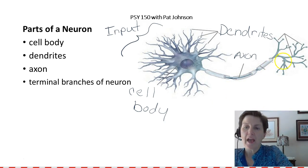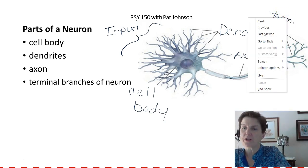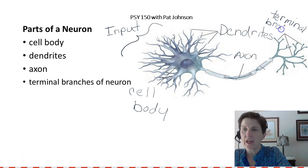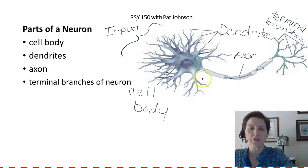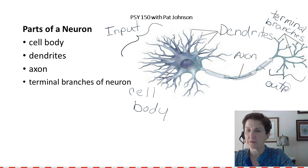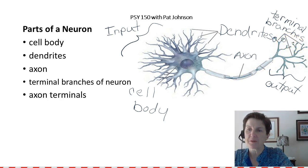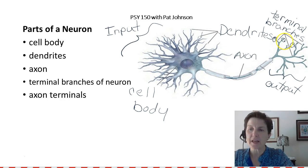The axon at the end of the neuron will form into terminal branches. We call these terminal branches of the neuron or terminal branches of the axon. These are the ending points of our neuron — we would also call this the output end. At the end of the terminal branches you can see a little swelling; these are called the axon terminals. Just like in an airport where the terminal is at the end, the axon terminals are at the very end of the neuron.